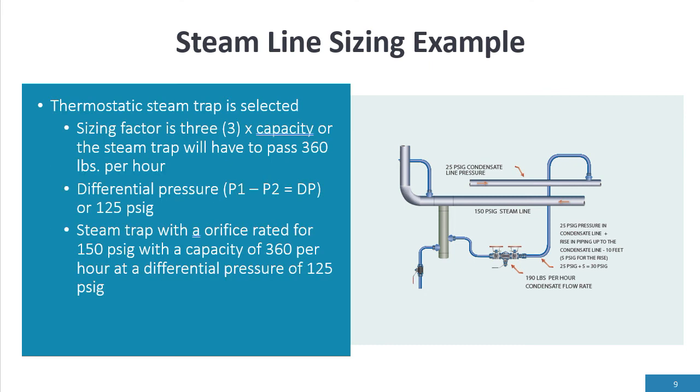I go and the sizing factor is three. I'm going to use the thermostatic design steam trap. So three times my capacity, I have to pass 360 pounds per hour condensate. My differential pressure is 125 psi.